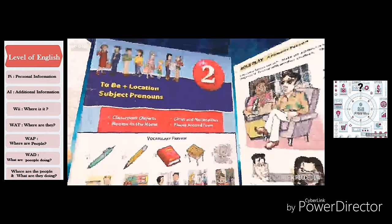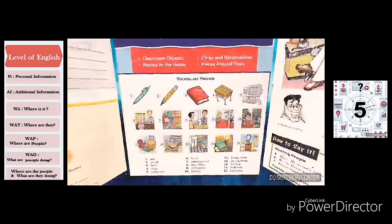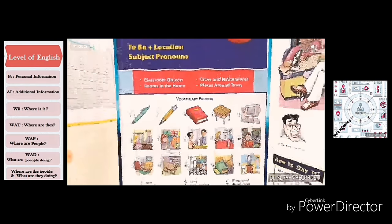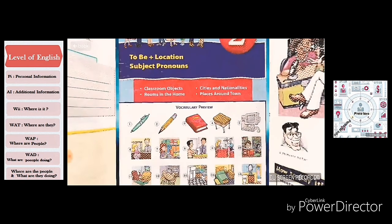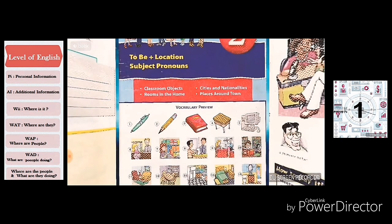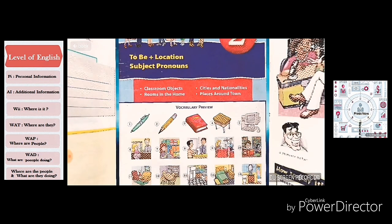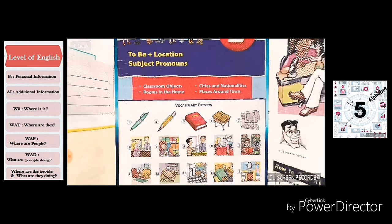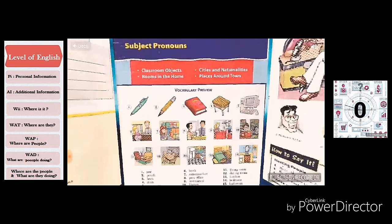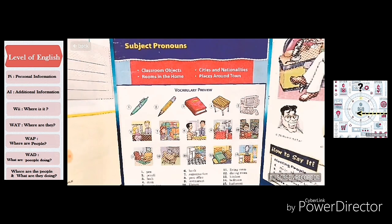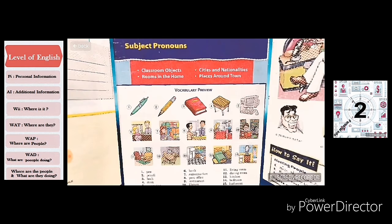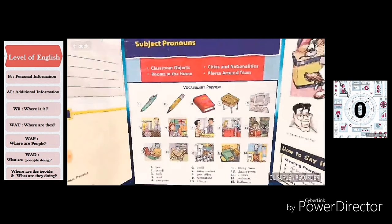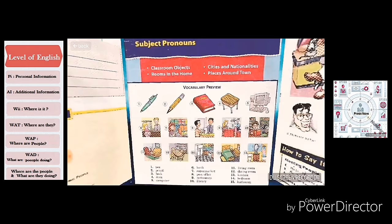And to start off the second chapter next video, which I already published, it's focusing on to be, locations, and subject pronouns. For example, where is the lighter? Where is the pen? Where is the stove? You know, one item. We're talking about singular items. And we're going to be focusing on classroom objects. Then we continue to rooms and at home, and then we're going to continue to city, cities and nationalities and places around town. So right now this is it. Make sure that you do focus for this vocabulary for the next class.